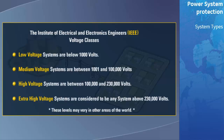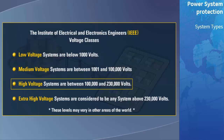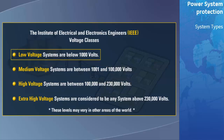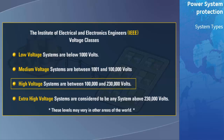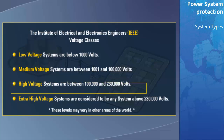The Institute of Electrical and Electronics Engineers, sometimes referred to as the IEEE, have divided voltage systems into low, medium, high voltage, and extra high classes. Low voltage systems are below 1,000 volts. Medium voltage systems are between 1,001 and 100,000 volts. High voltage systems are between 100,000 and 230,000 volts. And extra high voltage systems are considered to be any system above 230,000 volts. The voltage levels may vary in different parts of the world, but the names of the classes for the most part remain consistent.